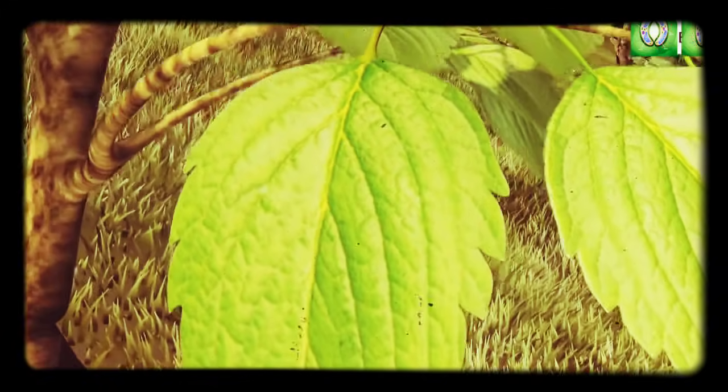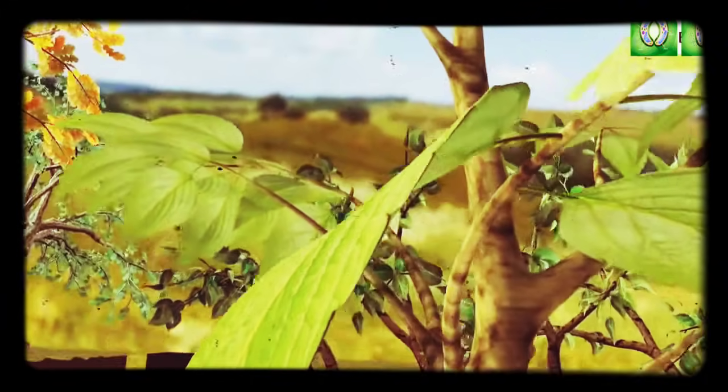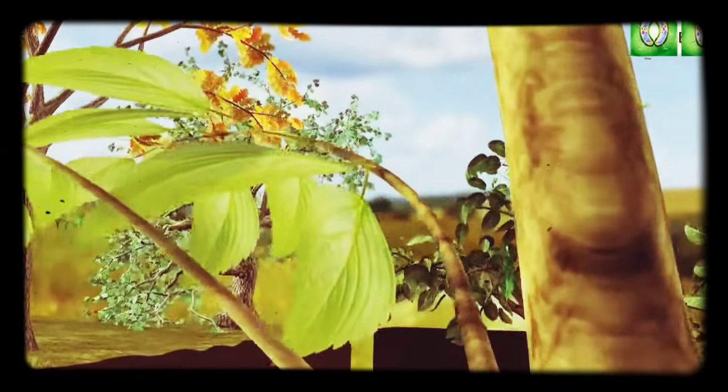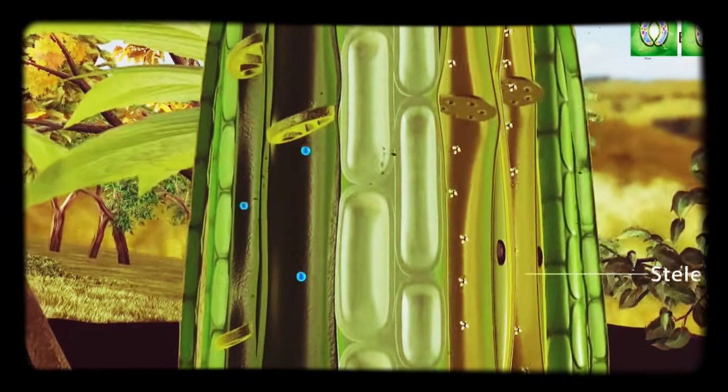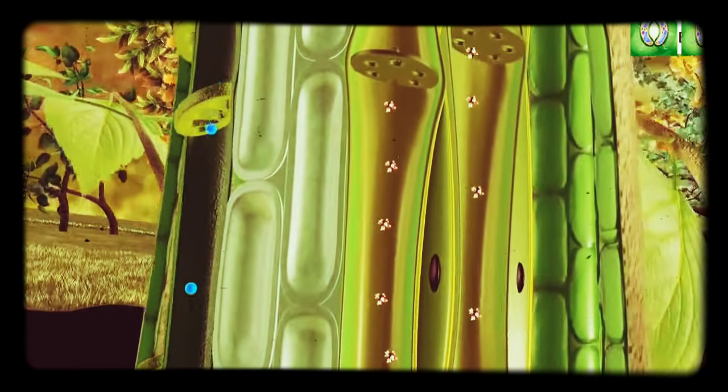Phloem tissue consists of less specialized and nucleate parenchyma cells, sieve tube cells, and companion cells. Transport of food in phloem can be up or down the stem to reach all parts of the plant.